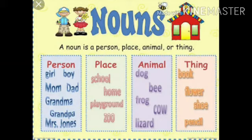Some more examples are given and classified accordingly. Persons: girl, boy, mom, dad, grandma, and grandpa. Places: school, home, playground, zoo.